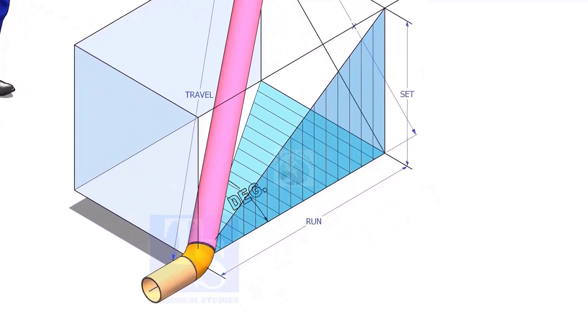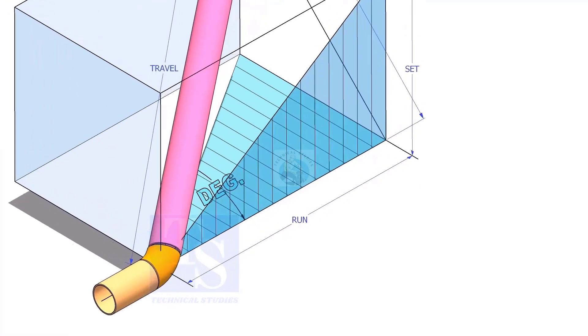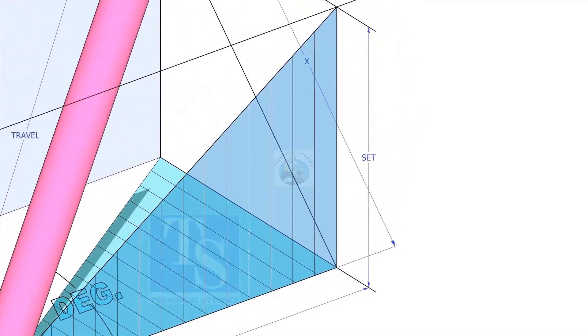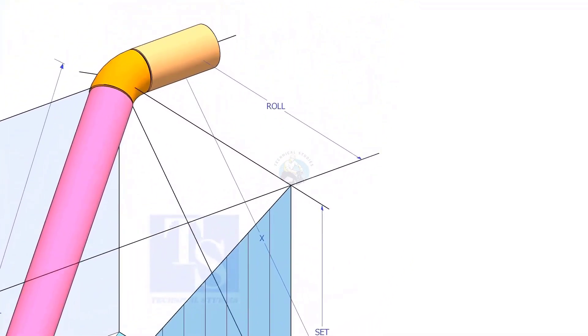In this video, I will show you how to calculate the travel length and the including angle of a double rolled offset pipe.